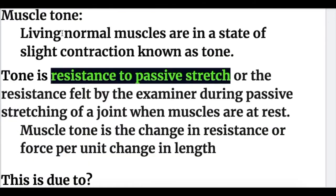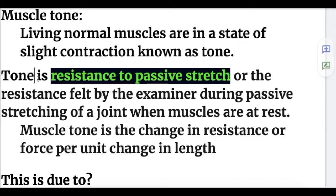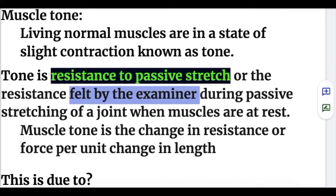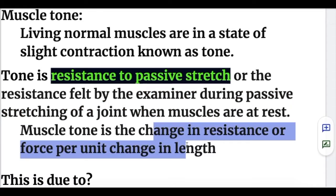So what is muscle tone? Living normal muscles are in a state of slight contraction known as tone. Tone is resistance to passive stretch, or the resistance felt by the examiner during passive stretching of a joint when muscles are at rest. Mathematically, muscle tone is the change in resistance or force per unit change in length.